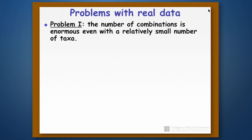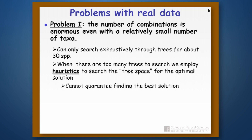So what can we do about this? When you're working with real data, we can only search exhaustively — meaning look at every single topology — for about 30 species. If you're working with more than 30 species, there's just not enough computational power to search exhaustively through all the possible trees. So instead, we do something in computer science referred to as heuristics: searching through tree space without looking at every single tree, in a way that allows us to find a really good solution even though we can't guarantee it will be the absolute best solution.